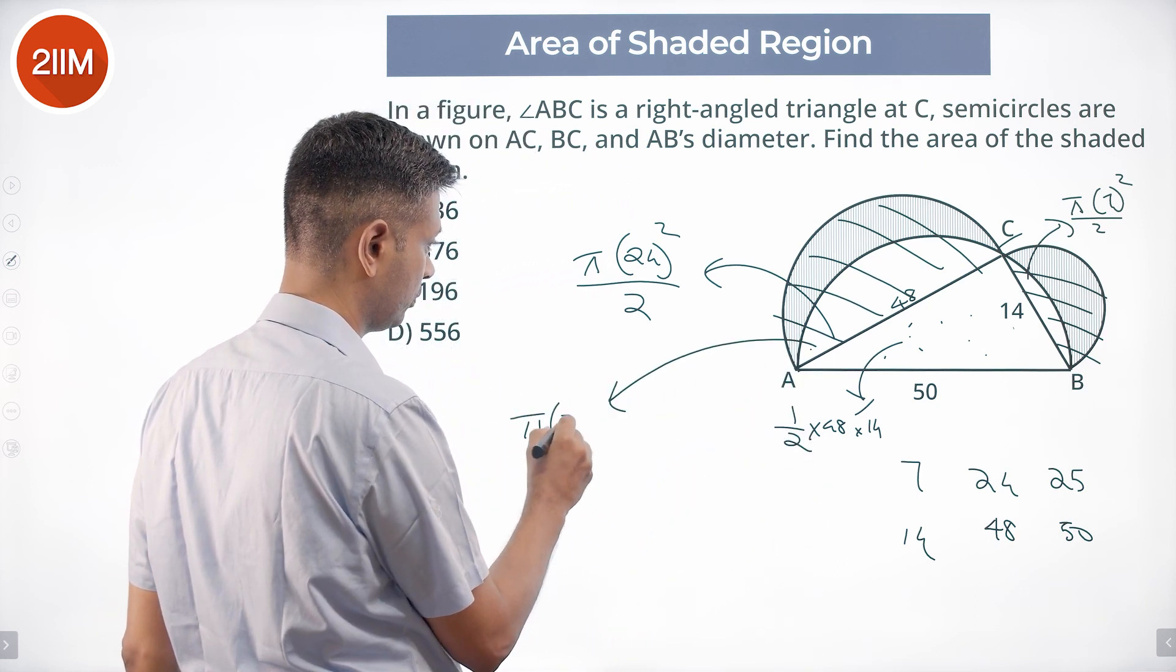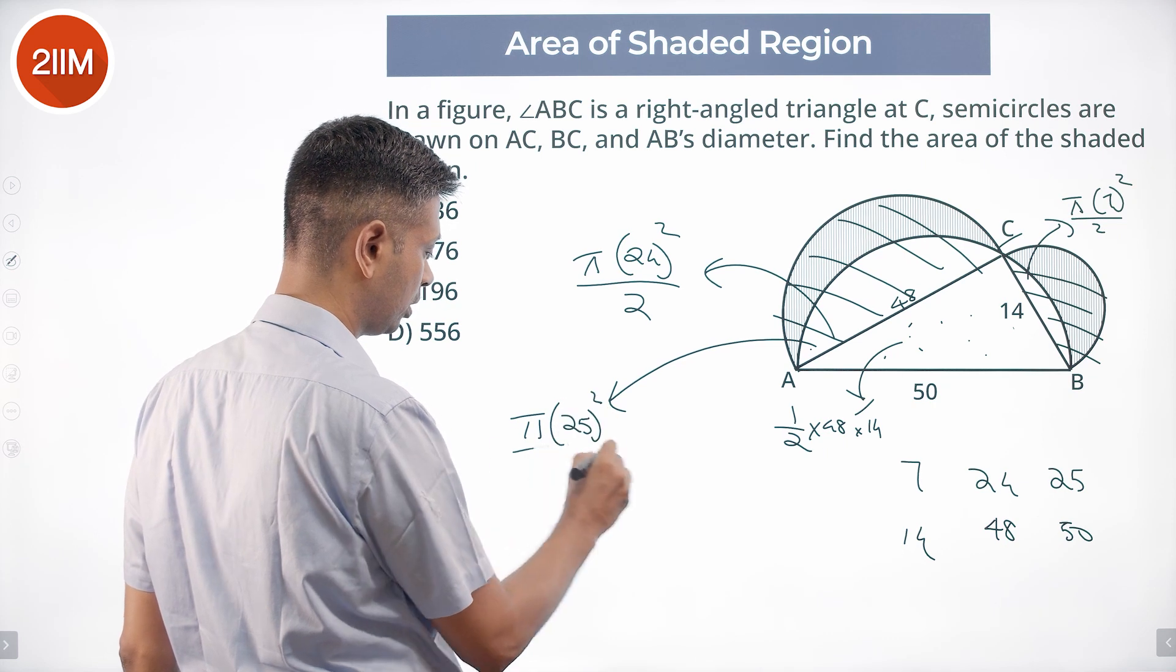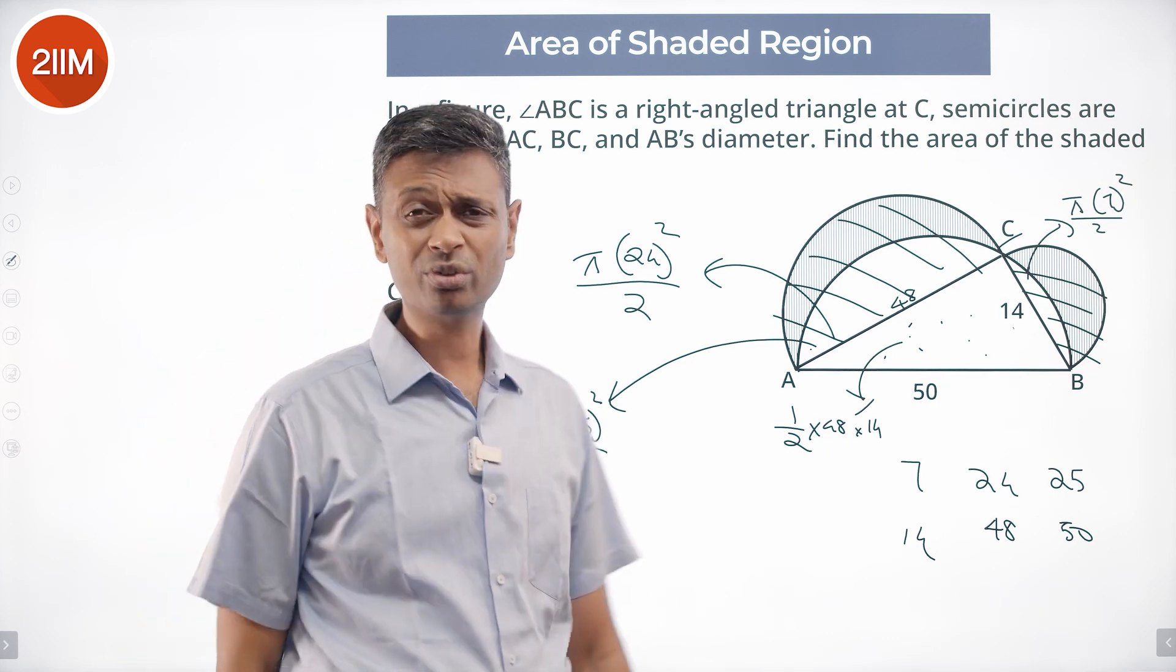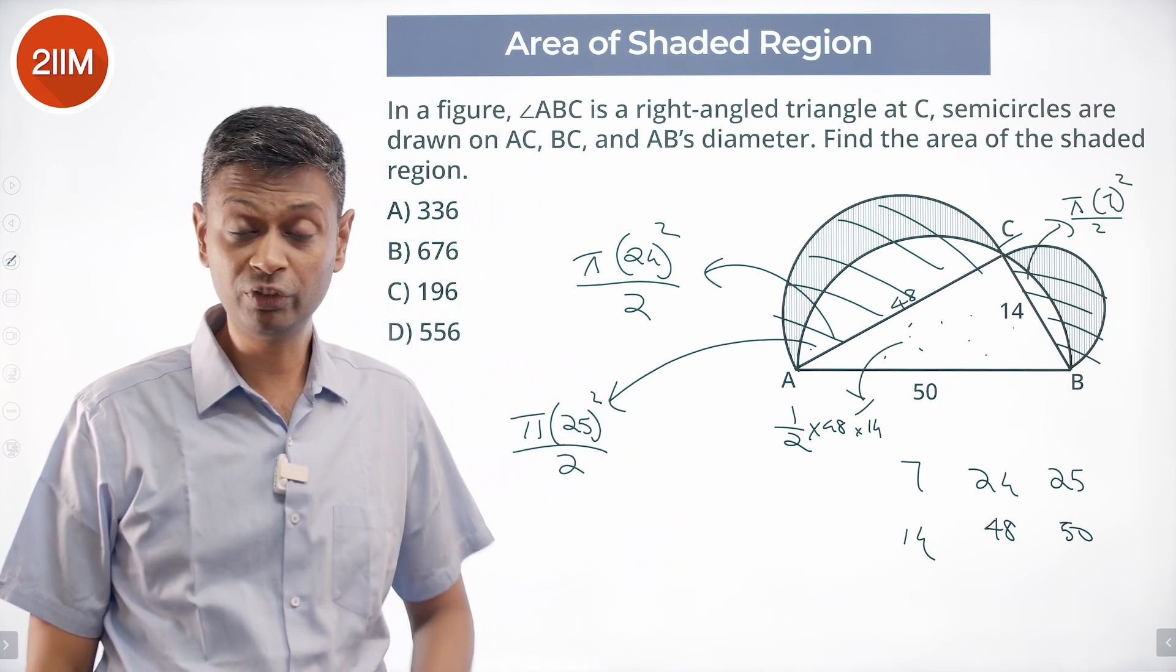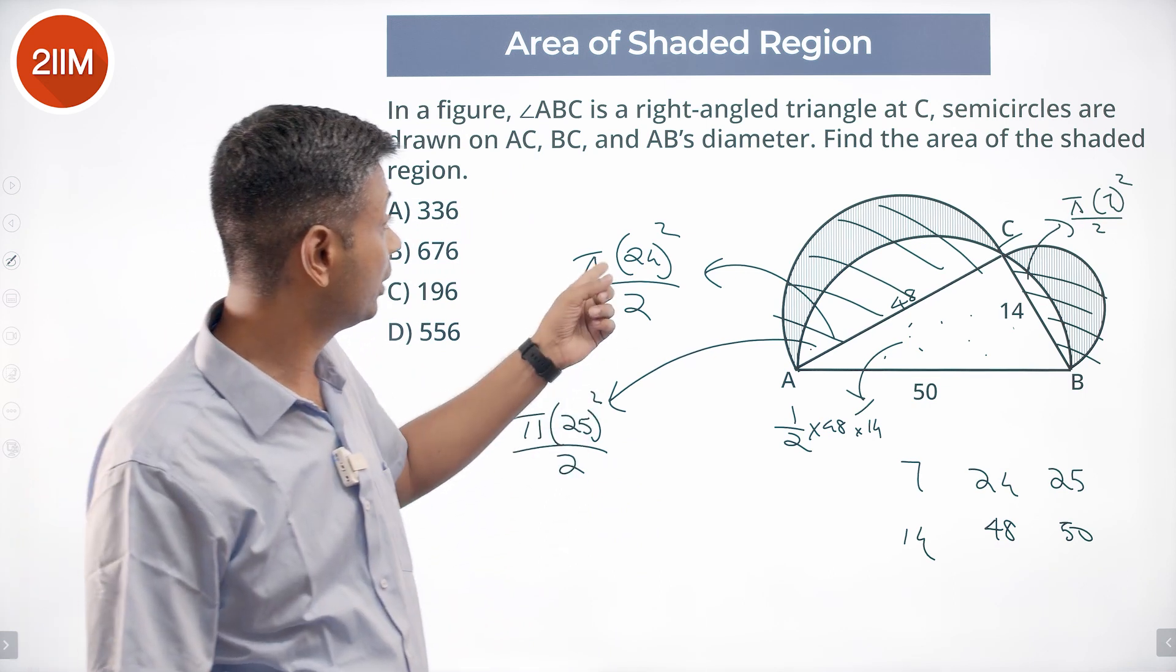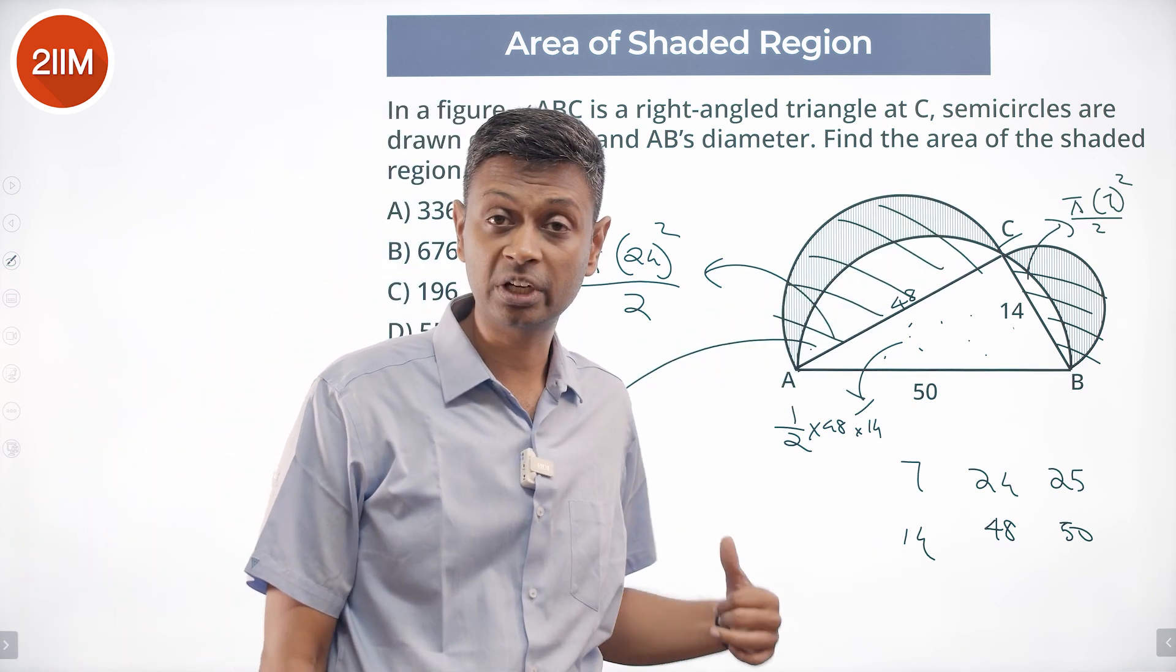Is π times 25 squared by 2. Now I am not going to solve and find all of this. We know one beautiful thing: 24² plus 7² is 25².